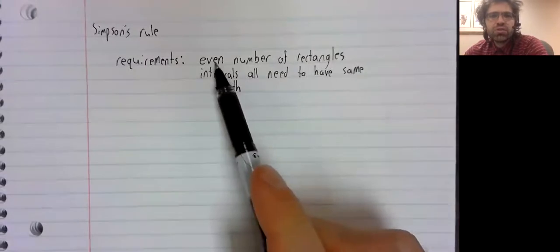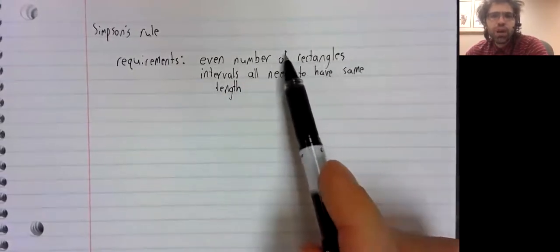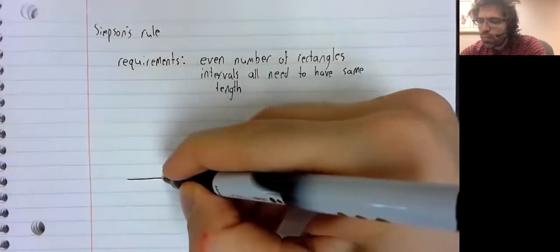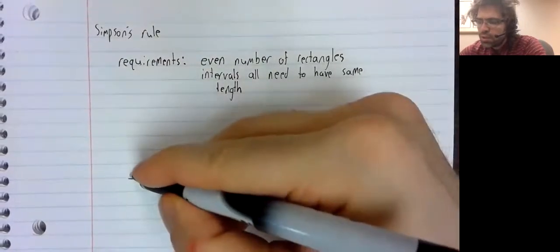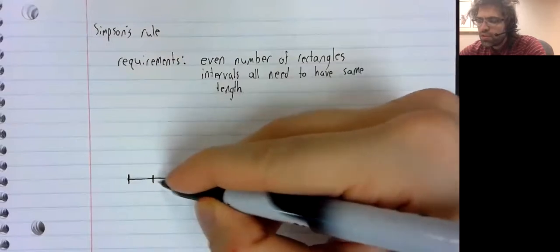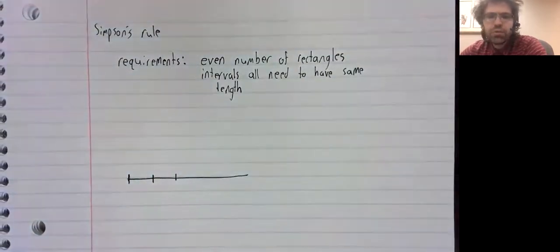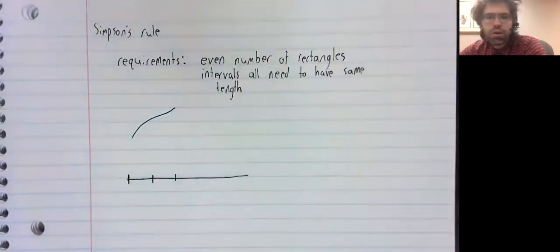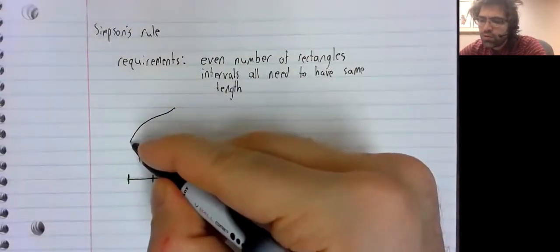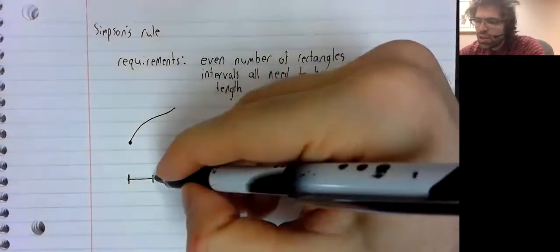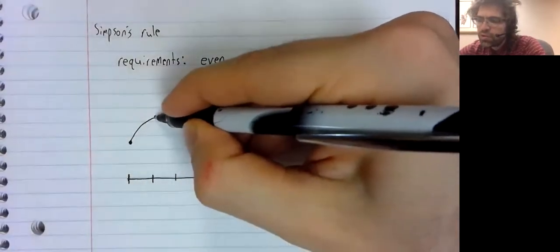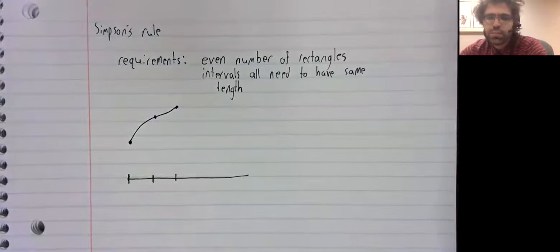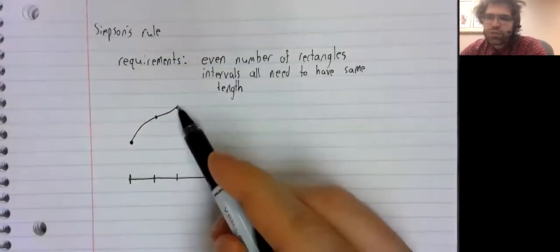Let's show where this requirement comes from, and also where Simpson's Rule comes from. Let's say we have two intervals, and we're looking at the curve on those intervals. We look at this point here, this point here, and this point here.